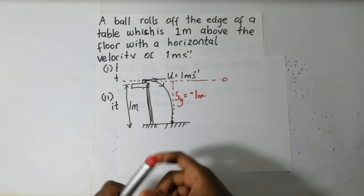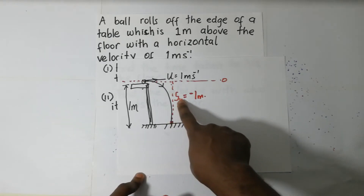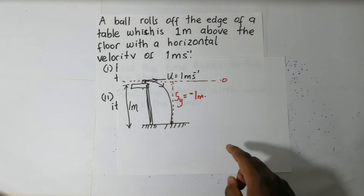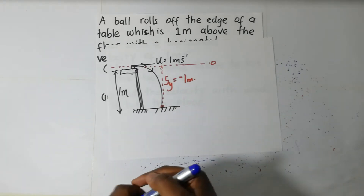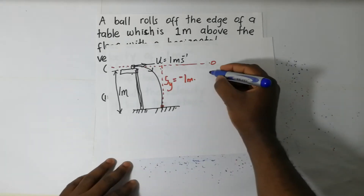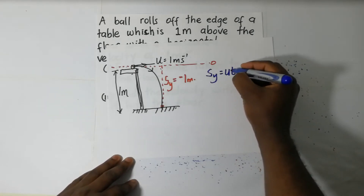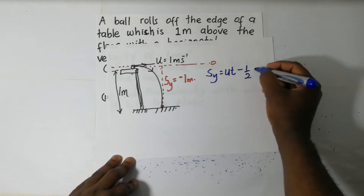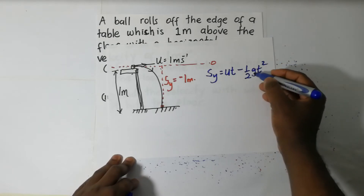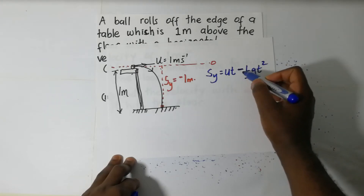Since that's the information we have and we want to find the time, we use the formula: displacement in the y direction equals u·t minus one half g·t². The minus sign comes from the fact that gravity is negative.